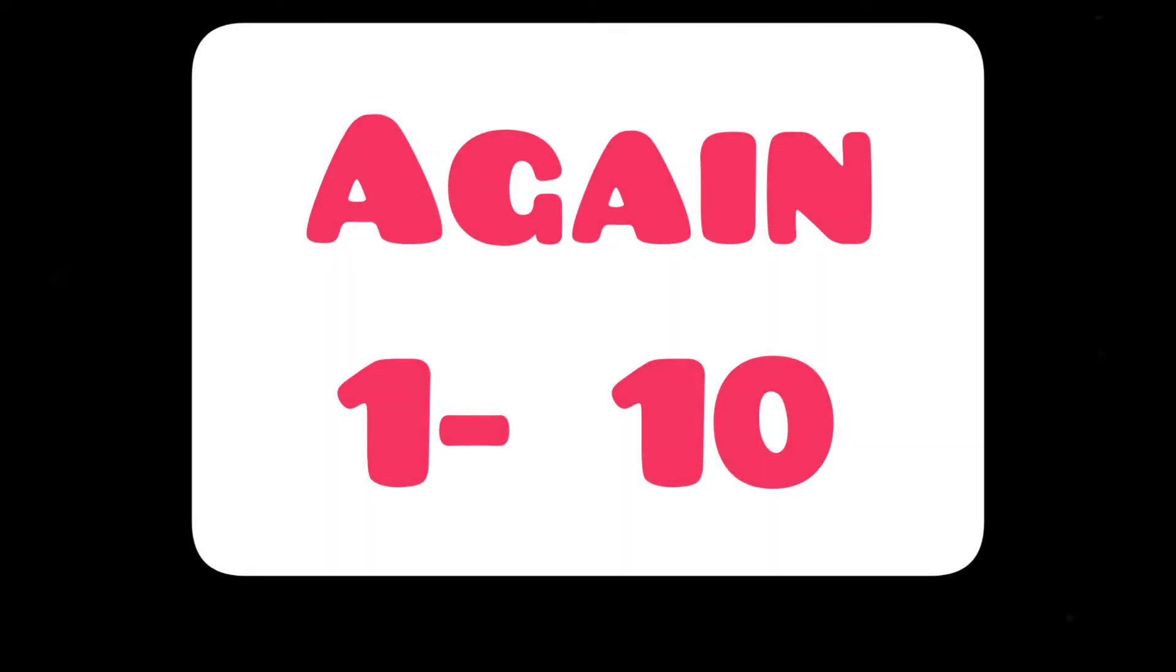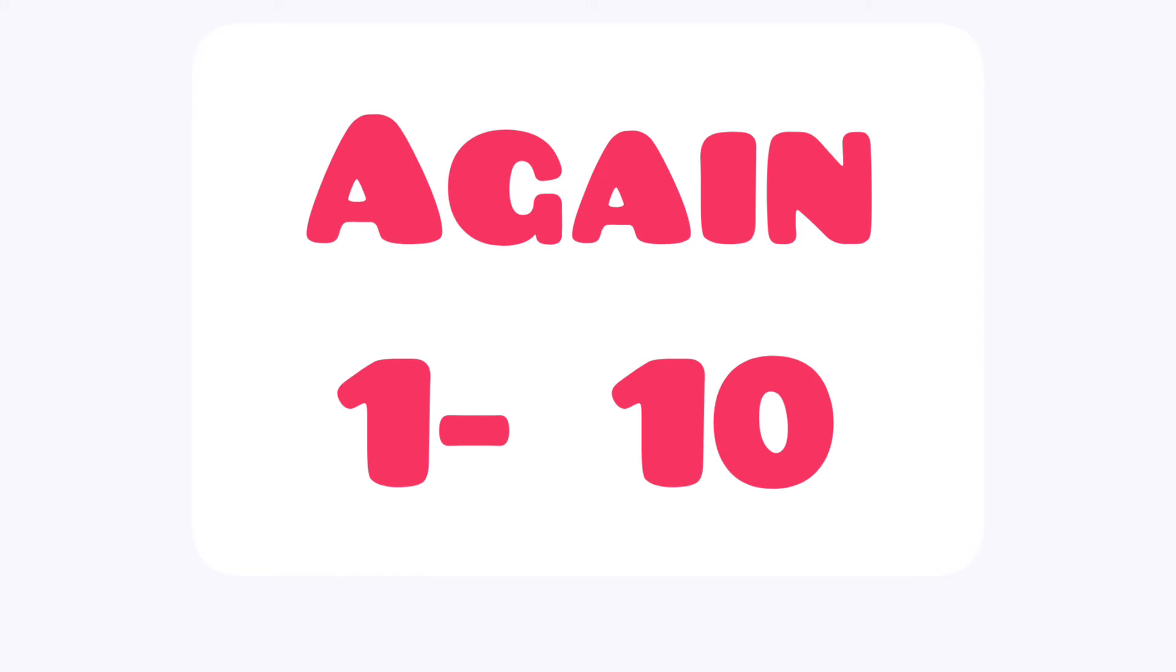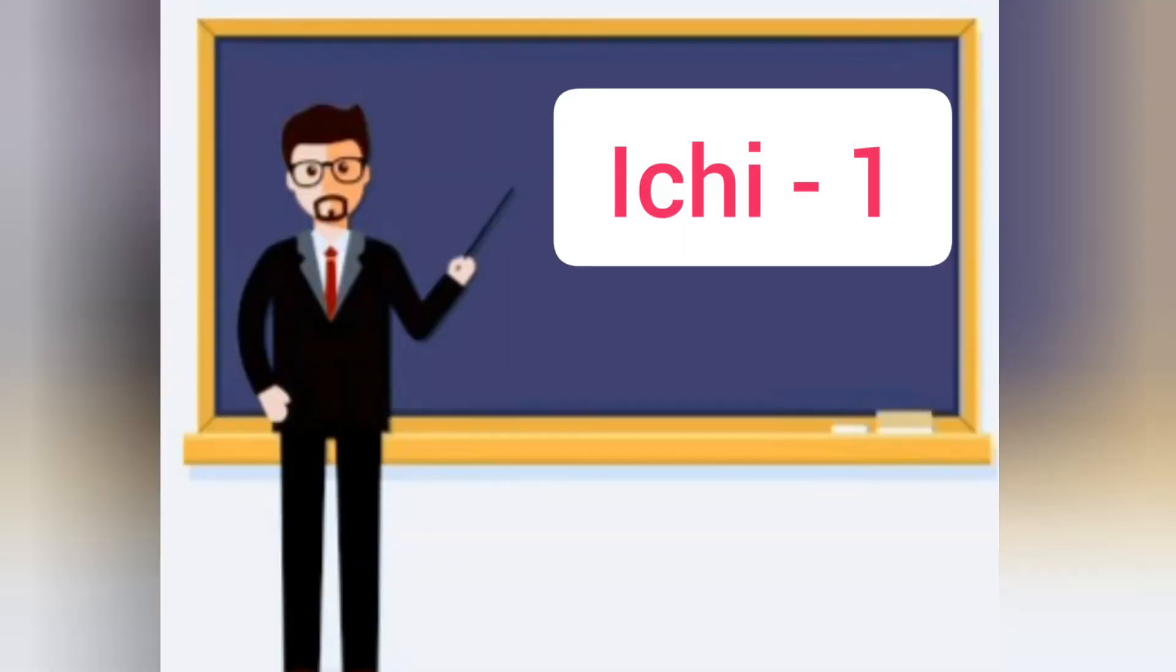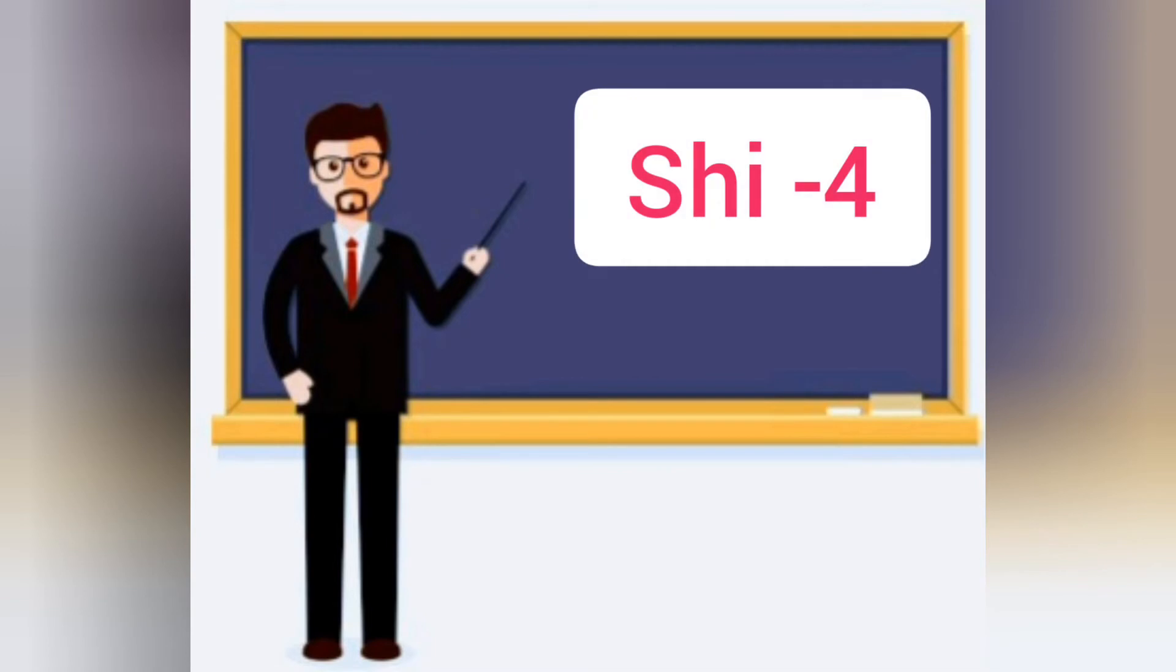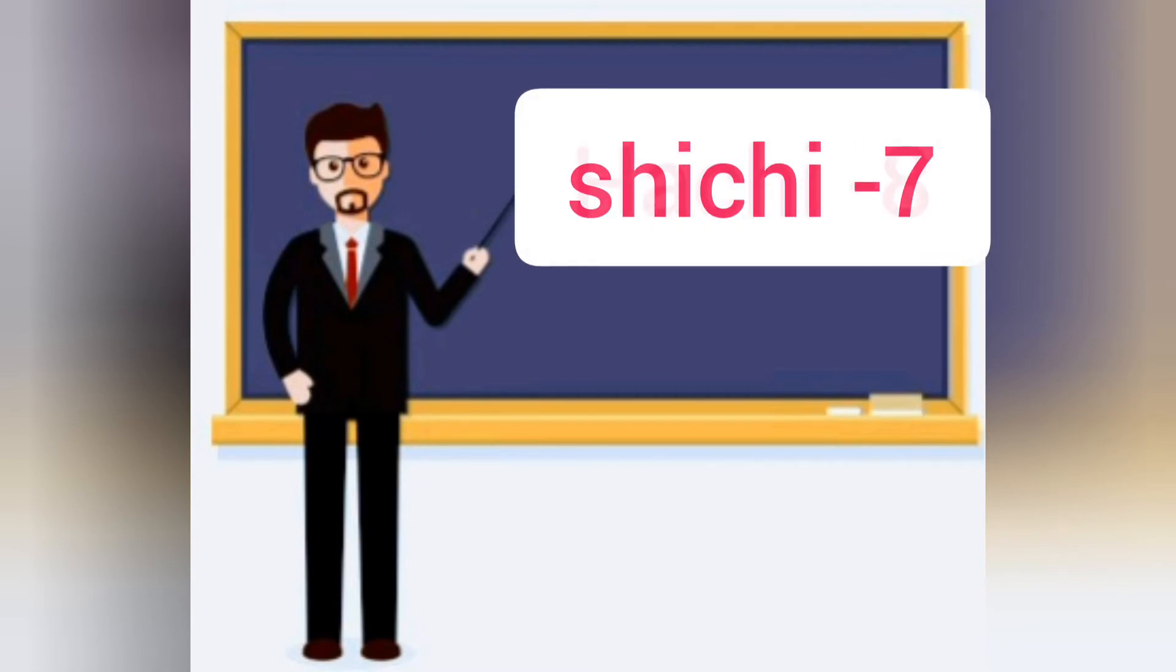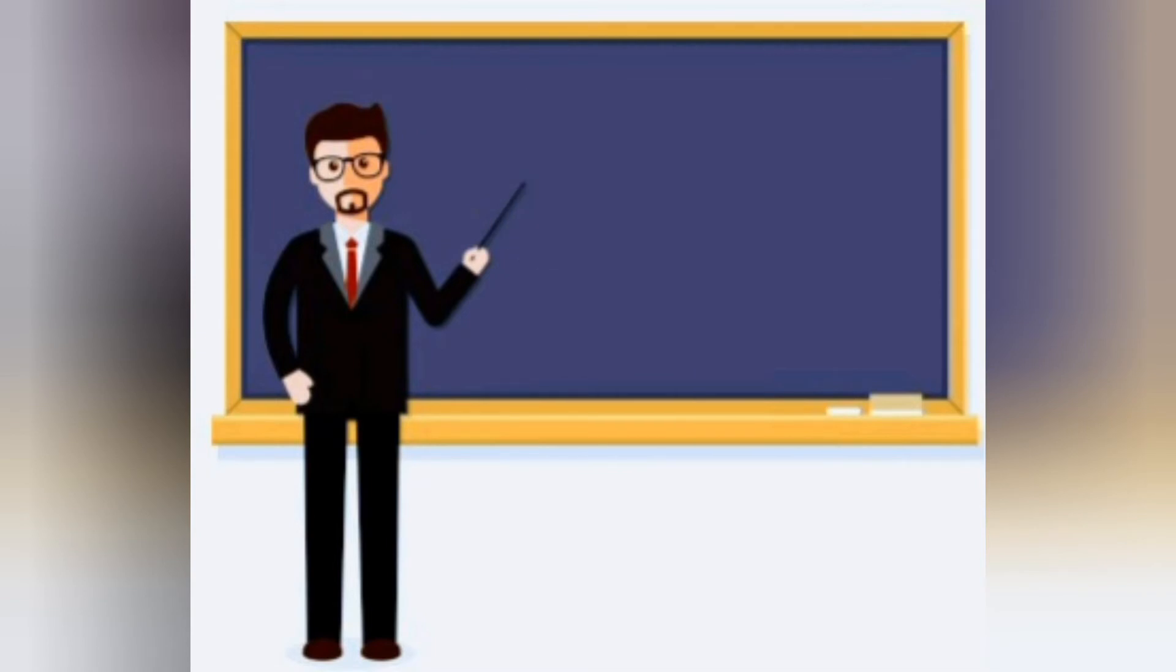Okay, once again, quickly let's count number one to ten in Japanese. Ichi, ni, san, shi, go, roku, shichi, hachi, kyu, ju.